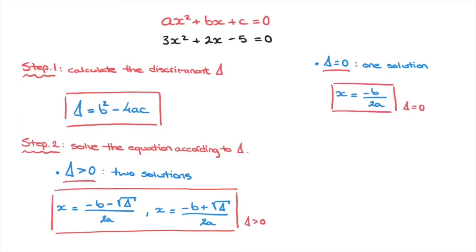Finally, the last scenario possible is if the discriminant delta is negative. In this case, there are no real solutions to the quadratic equation. So if we find that the discriminant is negative, we can stop there and state that the equation has no real solutions.